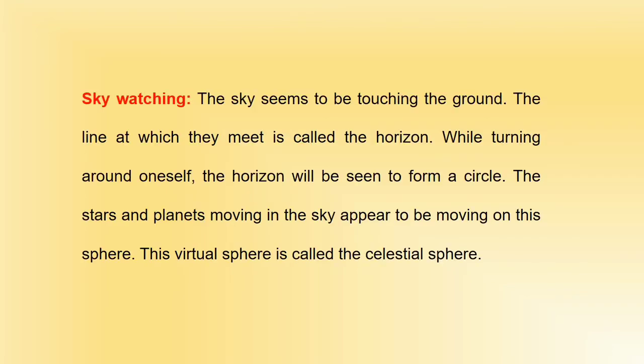Sky watching: the sky seems to be touching the ground. The line at which they meet is called the horizon. While turning around oneself, the horizon will be seen to form a circle. The stars and planets moving in the sky appear to be moving on this sphere. This virtual sphere is called the celestial sphere.